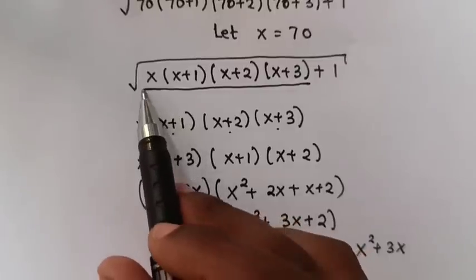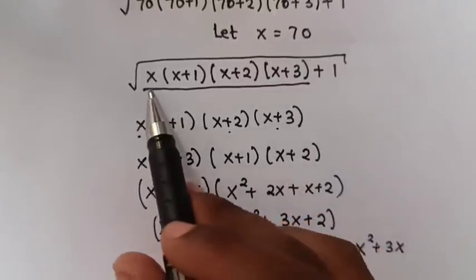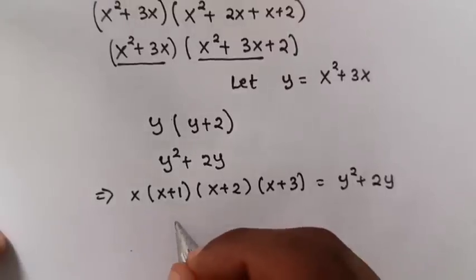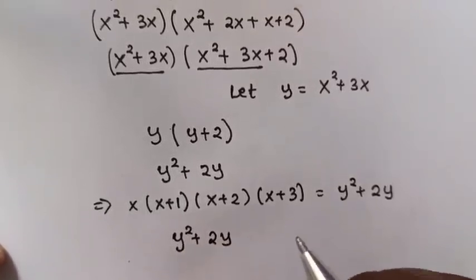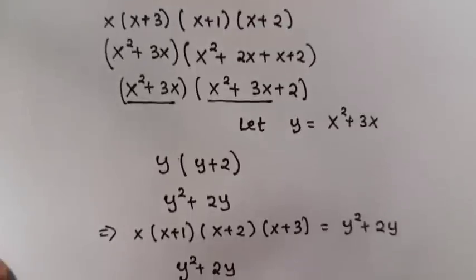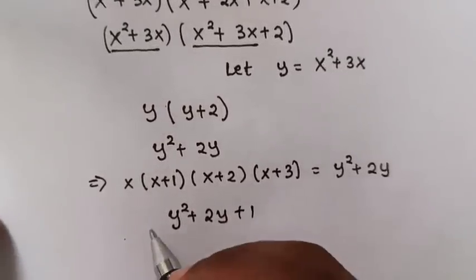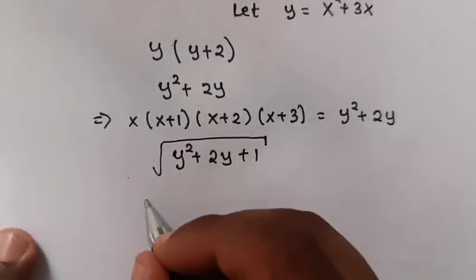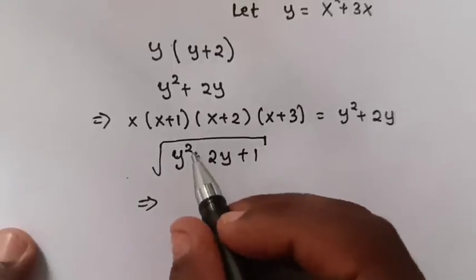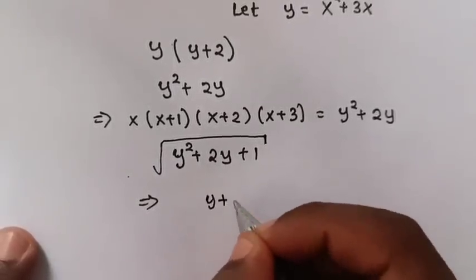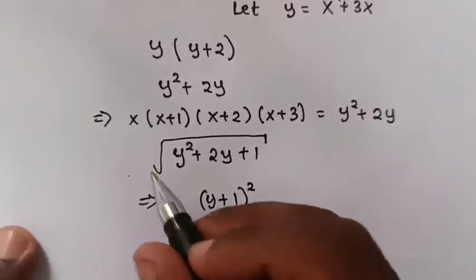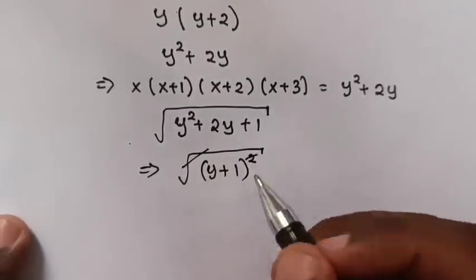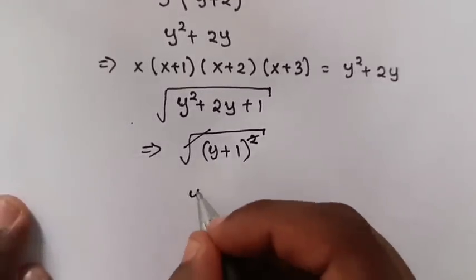Recall this expression was this one plus 1, all under square root. So it will be y squared plus 2y plus 1, all under square root. This expression, y squared plus 2y plus 1, is the same as y plus 1 bracket squared, all under square root. So this square root will cancel with the square, and it will remain y plus 1.